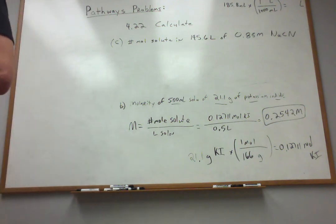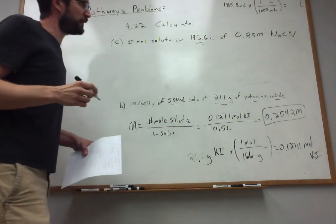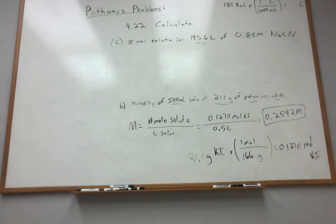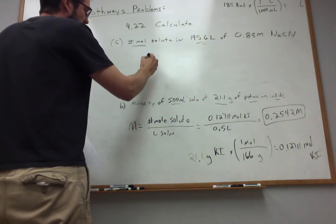All right, so we got a very large volume of 0.85 mole per liter sodium cyanide here. It makes me think back to the 70s when a bunch of people unfortunately were poisoned in South America by drinking a drink laced with sodium cyanide. Because this is such a huge quantity. I don't know what you'd need that much for. So it's kind of a bit of a morbid problem. But nonetheless, we can certainly work this. Now we want number of moles of the solute, which is the sodium cyanide.